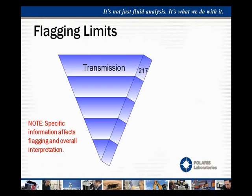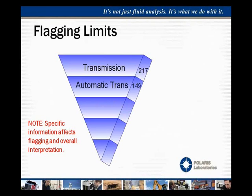Let me give an example of what we expect to see when we do flagging, just to show how critical having this information is. Let's say we're looking at a transmission. If we only know it's a transmission, we're going to flag it at 217 parts per million of iron. If we know it's an automatic transmission, we might flag it at 149 parts per million. So the tolerance that we flag at gets a little tighter.